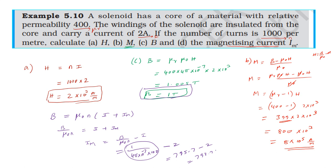The magnetizing current required is approximately 794 amperes.